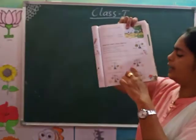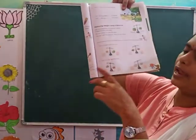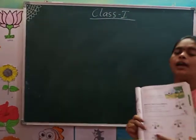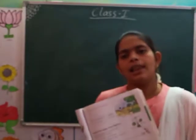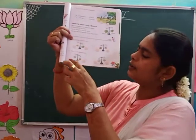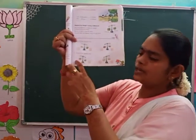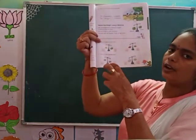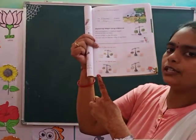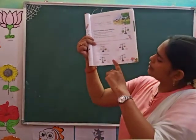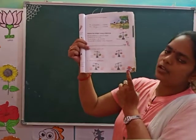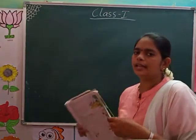And next, tick the lighter pan. For the first question, you have to tick on the heavier pan, and for the second, tick on the lighter pan. Which one is lighter — first or second? The first one is lighter, so tick on the first pan. And for the second question, the second one is lighter, so tick on the second one.